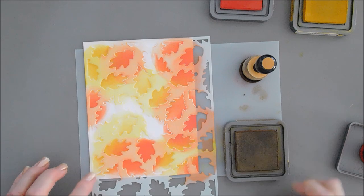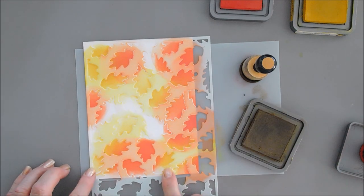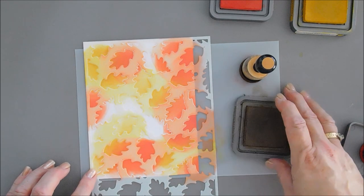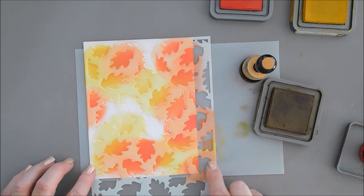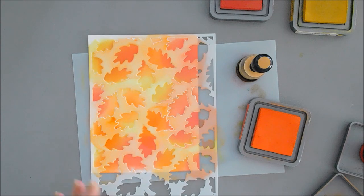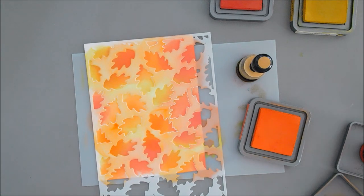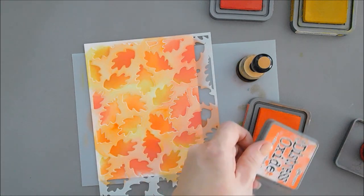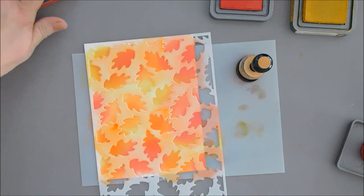Rather than using my brown ink for my leaves, I'm going to save my brown ink for layer number two. And I'm going to bring in an orange. I think that looks wonderful. Already looks like fall. I'm going to go ahead and put my lids back on my inks.